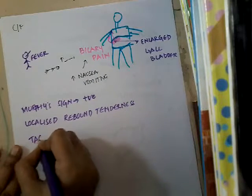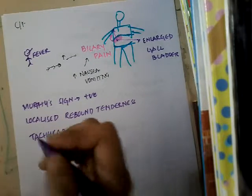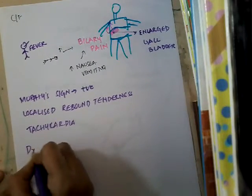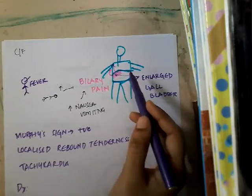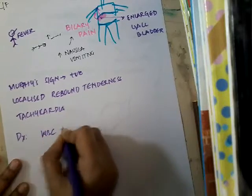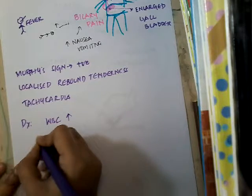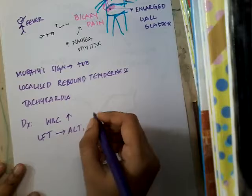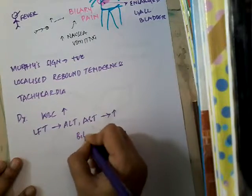The patient also has tachycardia, that is increased pulse. For diagnosis, if you see fever, biliary pain — right upper quadrant pain — and leukocytosis, and if you do liver function tests, the transaminases ALT and AST are increased and bilirubin is also increased.